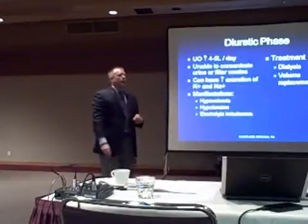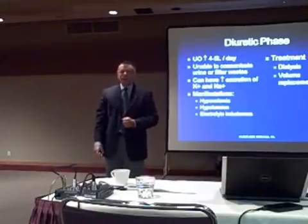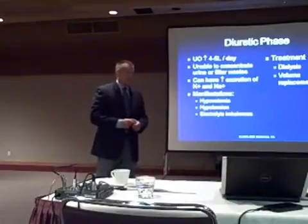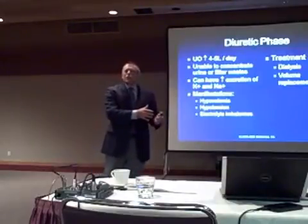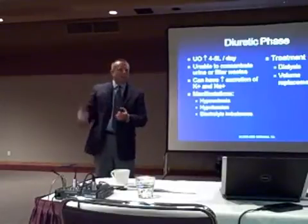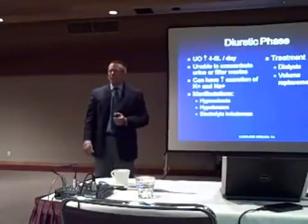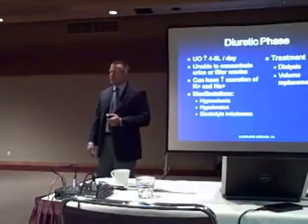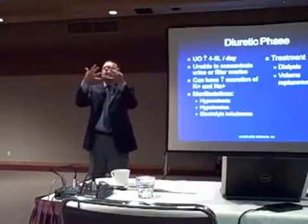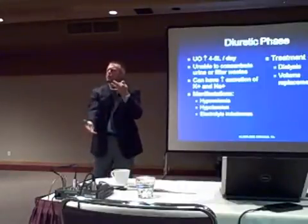The next phase is called the diuretic phase. As the name implies, your patient starts to diurese — and at this point, may be diuresing quite a bit. So the urine output in the oliguric phase may have been 5 cc's per hour; now it increases to 200 to 300 cc's per hour — a dramatic increase. But what's happening is the kidneys are just opening up, letting stuff spill through.